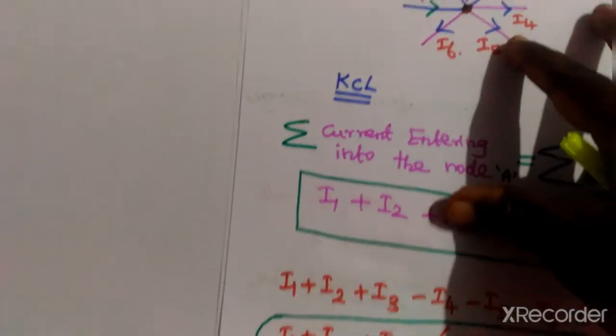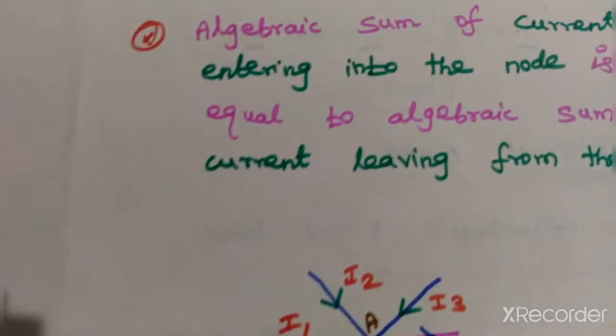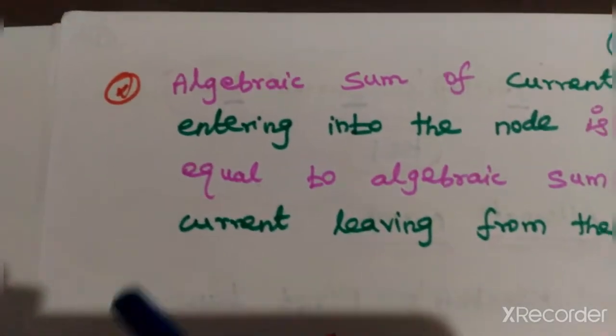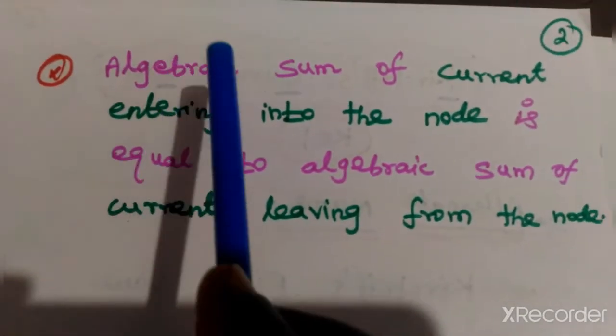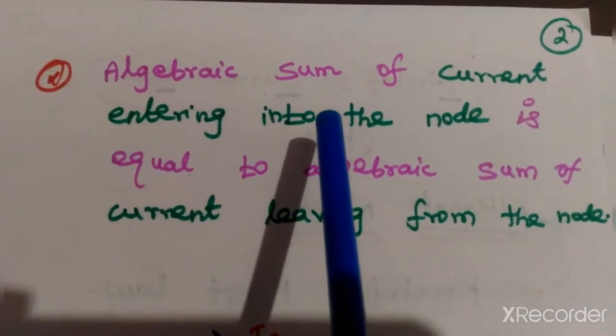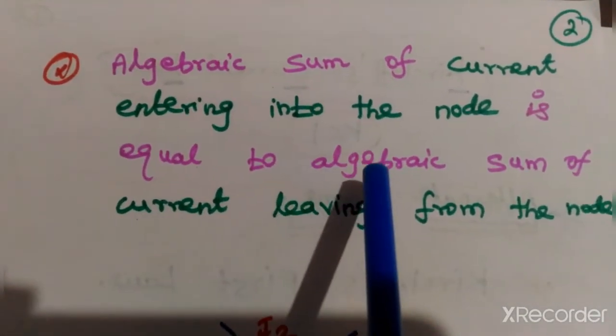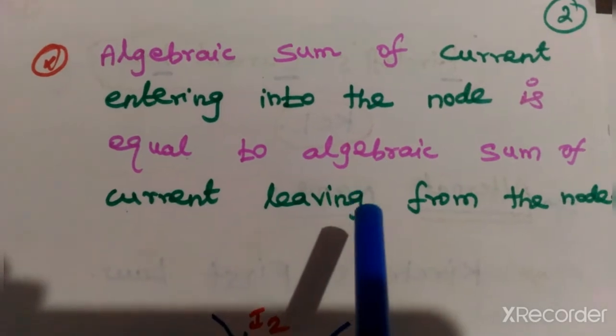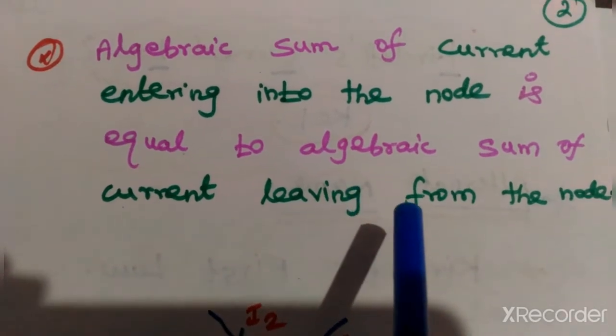Alternatively, Kirchhoff's current law states that the algebraic sum of current entering the node is equal to the algebraic sum of current leaving the node.